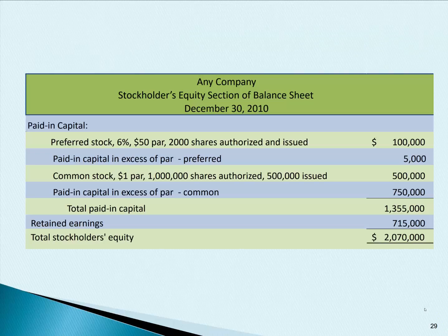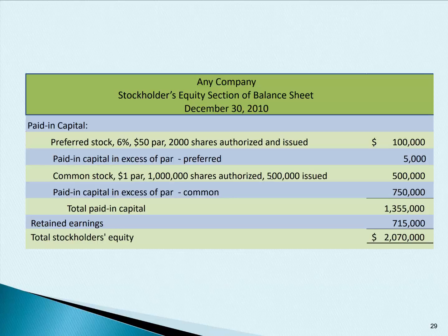So let's look at the equity section of a balance sheet. Notice we have paid-in capital, which consists of preferred stock — $50 par, 2,000 shares authorized and issued for a total of $100,000. We have paid-in capital in excess of par for the preferred stock: $5,000. Common stock is a $1 par. There's a million shares authorized, but they've only issued half of them — 500,000 shares issued gives us $500,000. And then paid-in capital in excess of par on the common stock is $750,000.